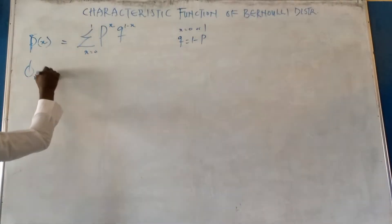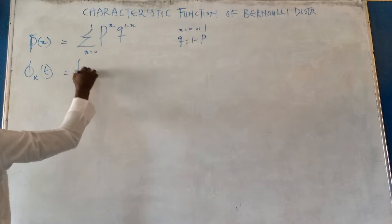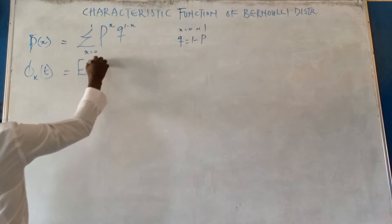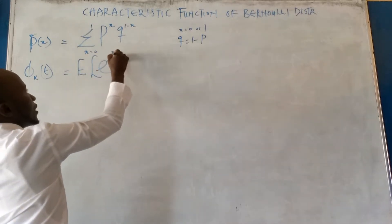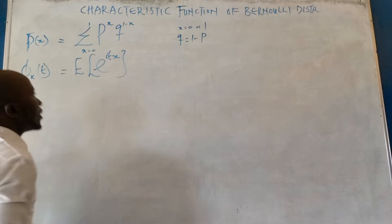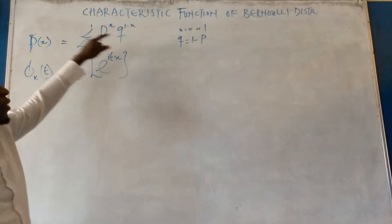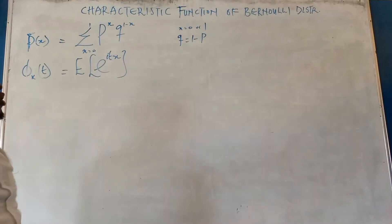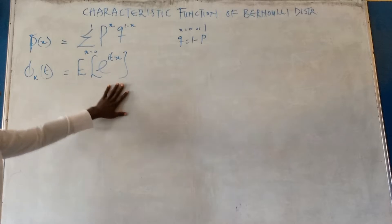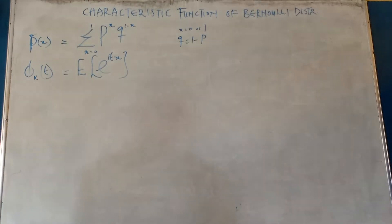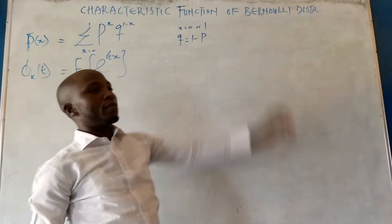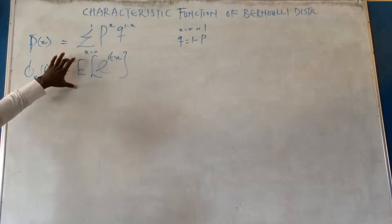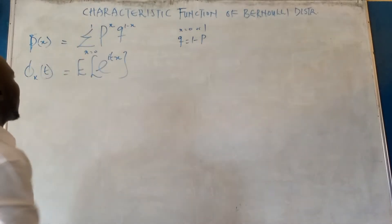The characteristic function is given as φ_X(t) = summation of e^(itX). This is the probability mass function of the Bernoulli distribution, and this is the characteristic function. Now we want to find the characteristic function of the Bernoulli distribution, meaning we are using both of these expressions.